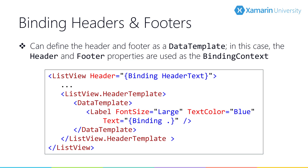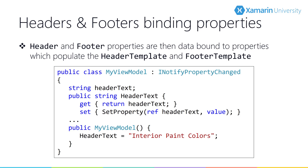We have HeaderTemplate, which is a data template for the header, and FooterTemplate, a data template for the footer. These are defined in XAML as your visualization and don't involve cells like other data templates. The binding context for these two templates will be the Header and Footer properties of the list view. So you bind the Header property to something in your view model — here we bind to a HeaderText property — and then define how to visualize it with the HeaderTemplate.